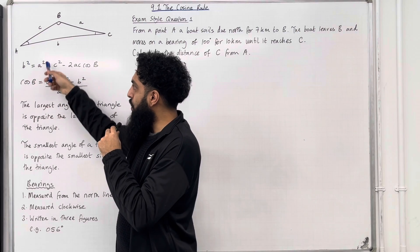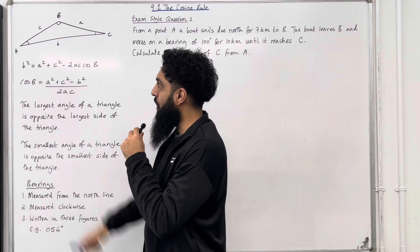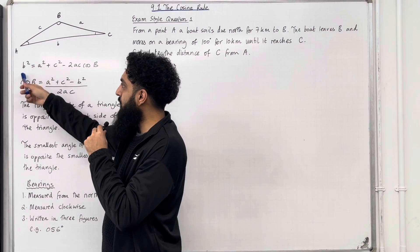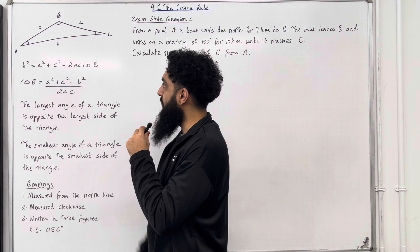The cosine rule is as follows: b squared equals a squared plus c squared minus 2ac cos B. We can apply some modifications over here so that if this part was a squared, over here you would have cos A. If this part was c squared, over here you would have cos C.